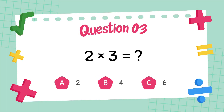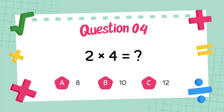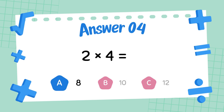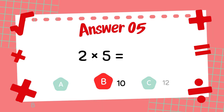What is 2 times 3? The answer is 6. What is 2 times 4? The answer is 8. What is 2 times 5? The answer is 10.